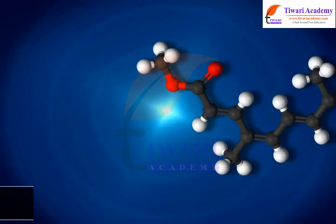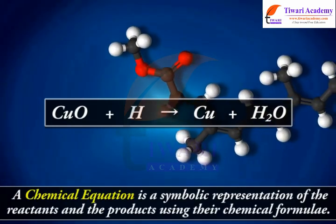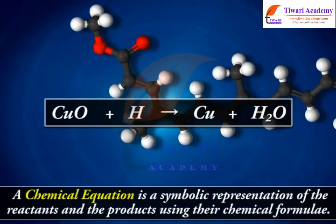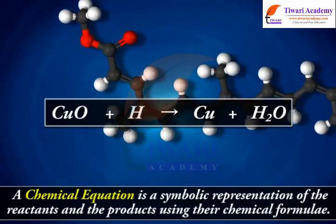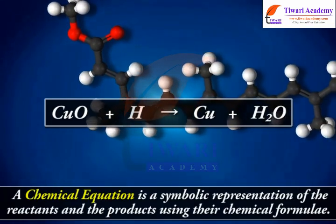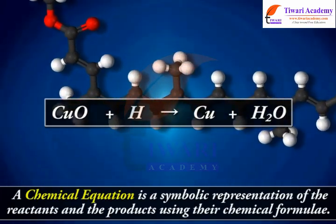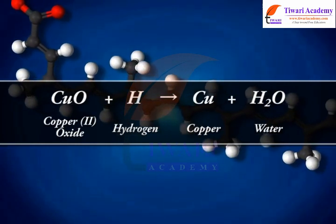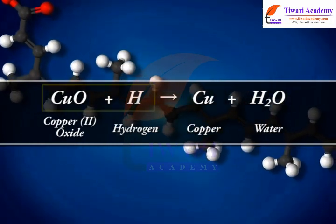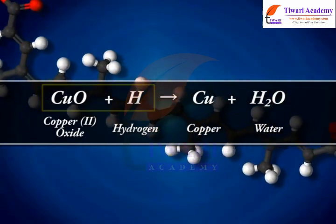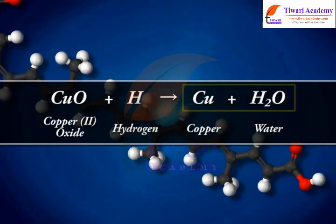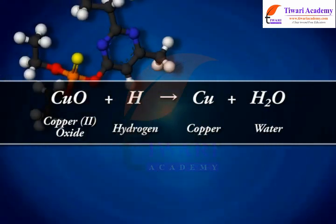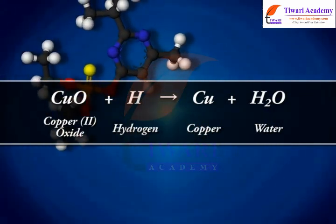A chemical equation is a symbolic representation of the reactants and the products using their chemical formulae. A chemical equation contains reactants, products, and an arrow that separates the reactants and products.